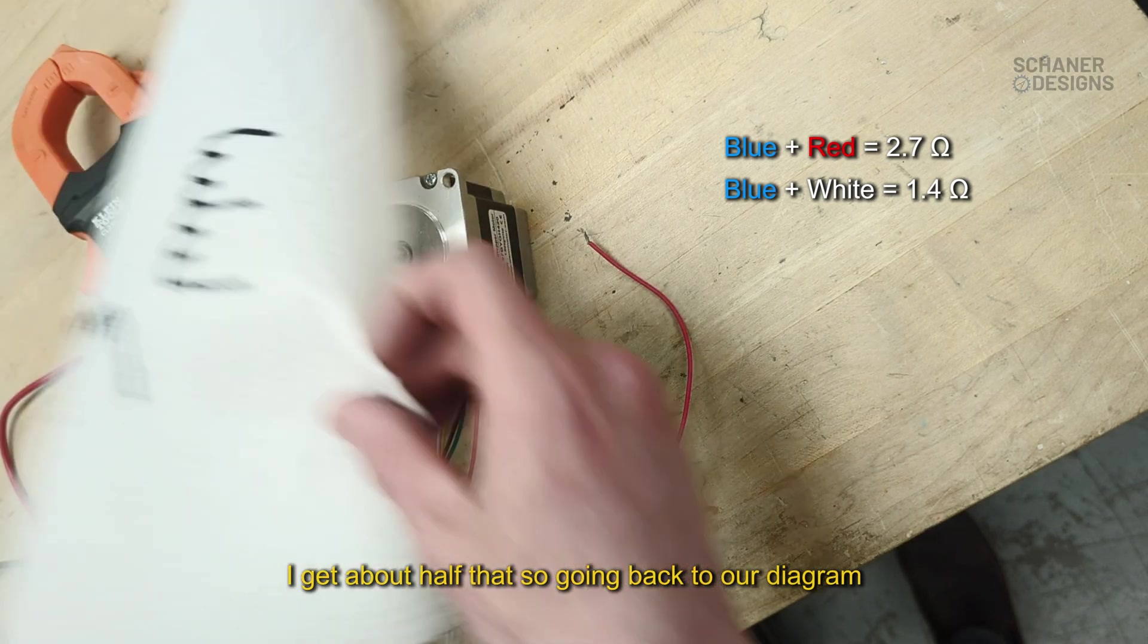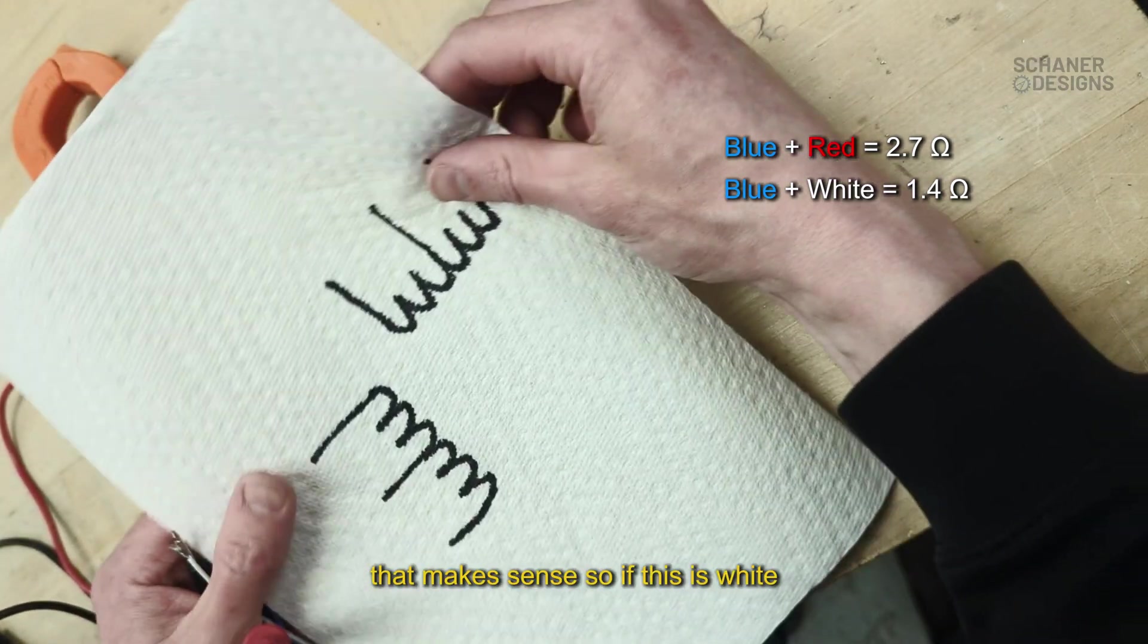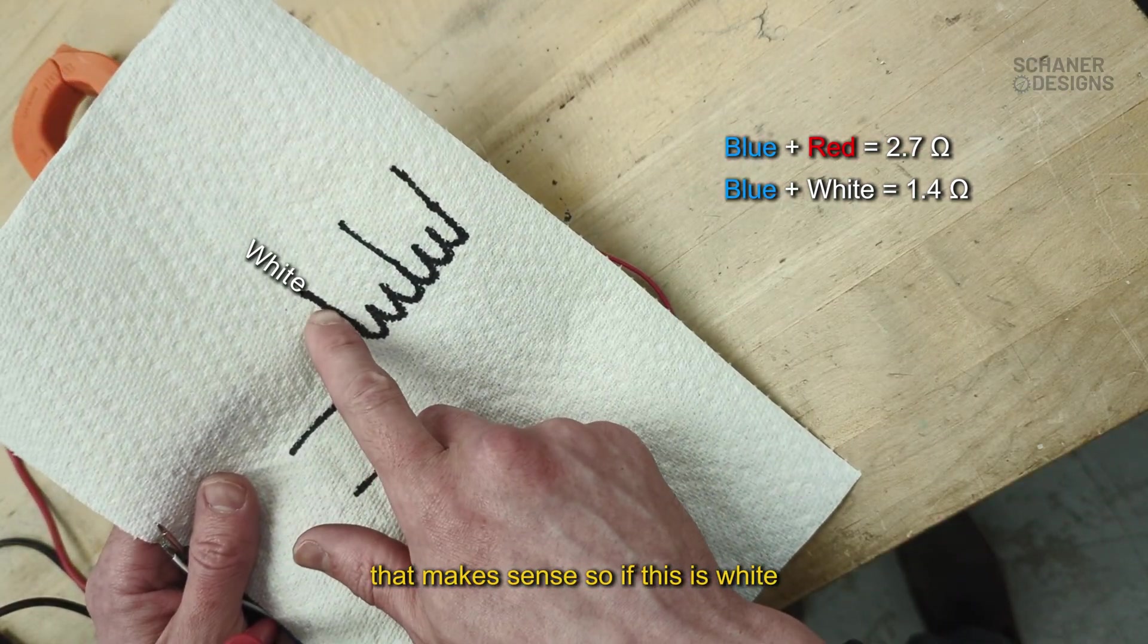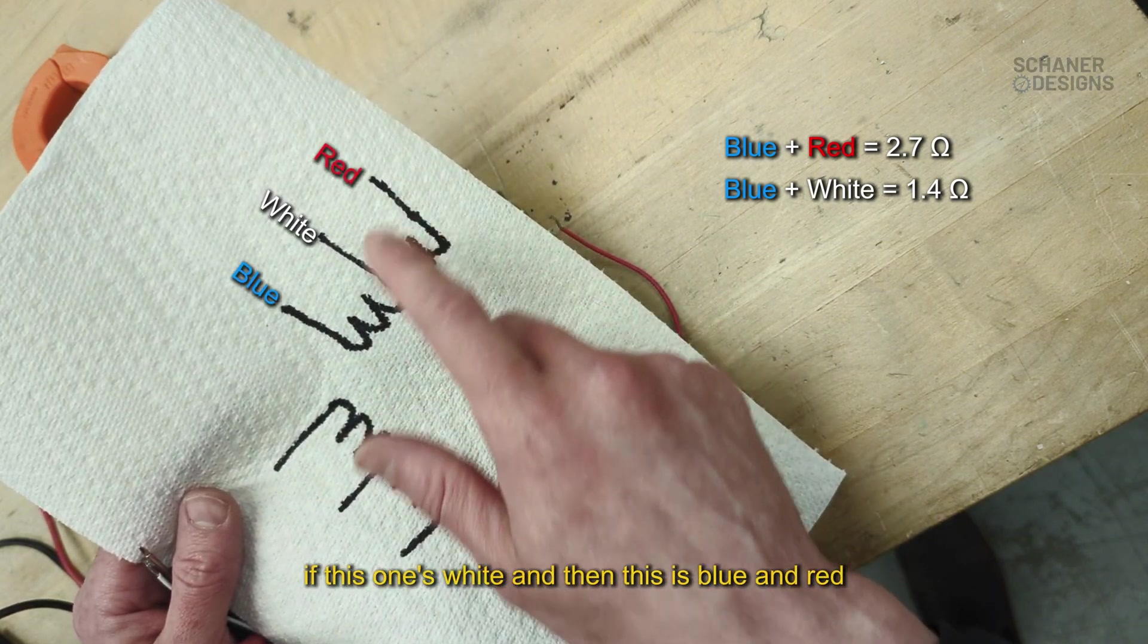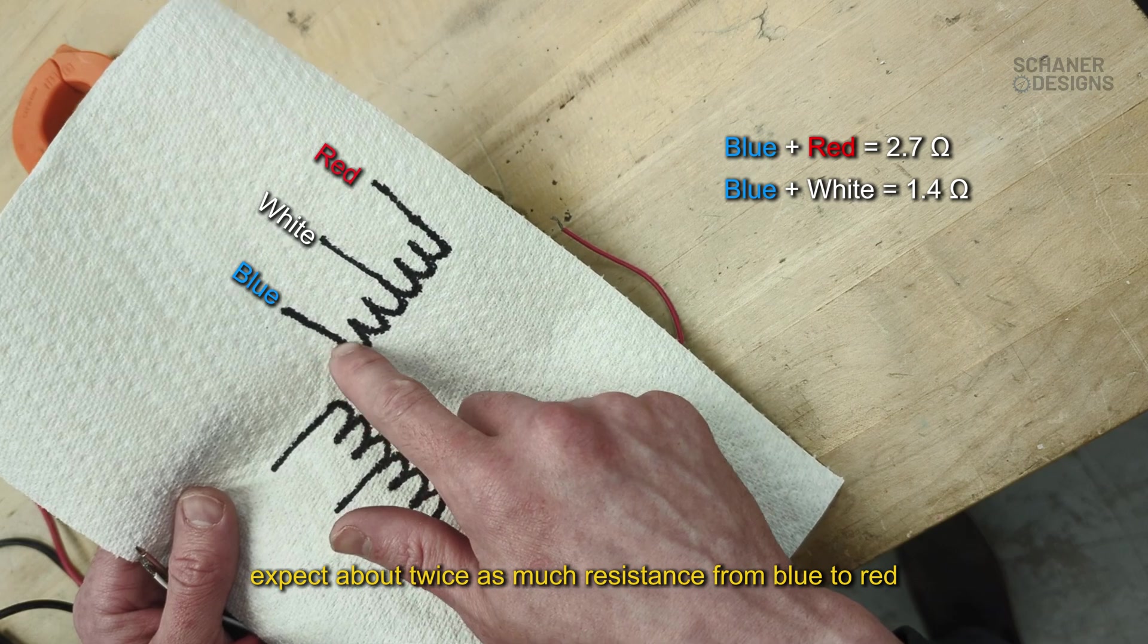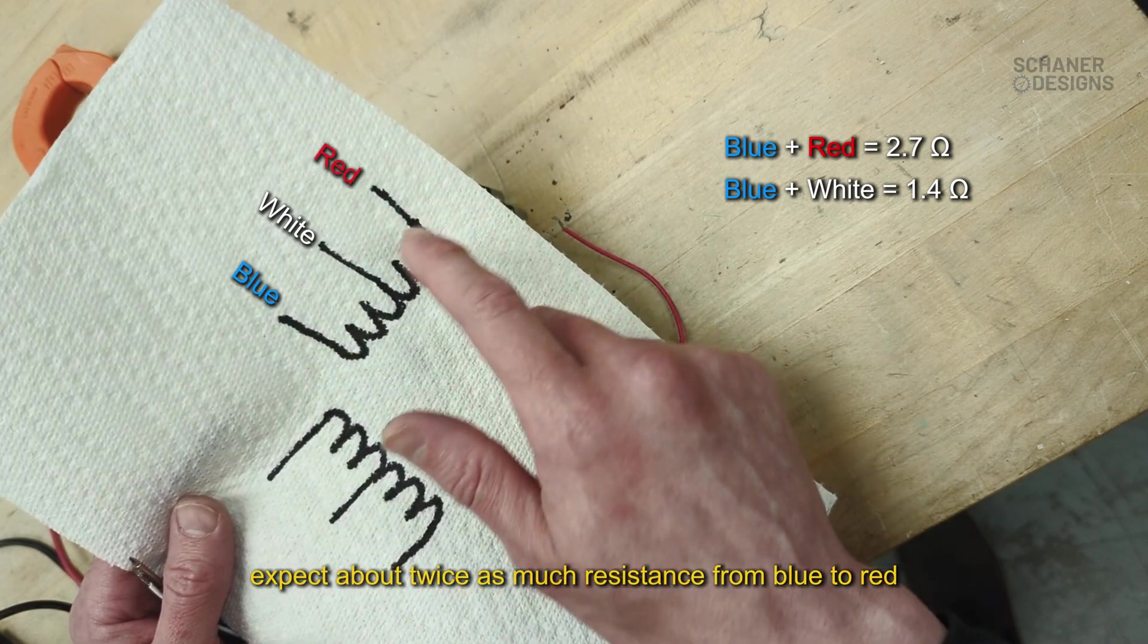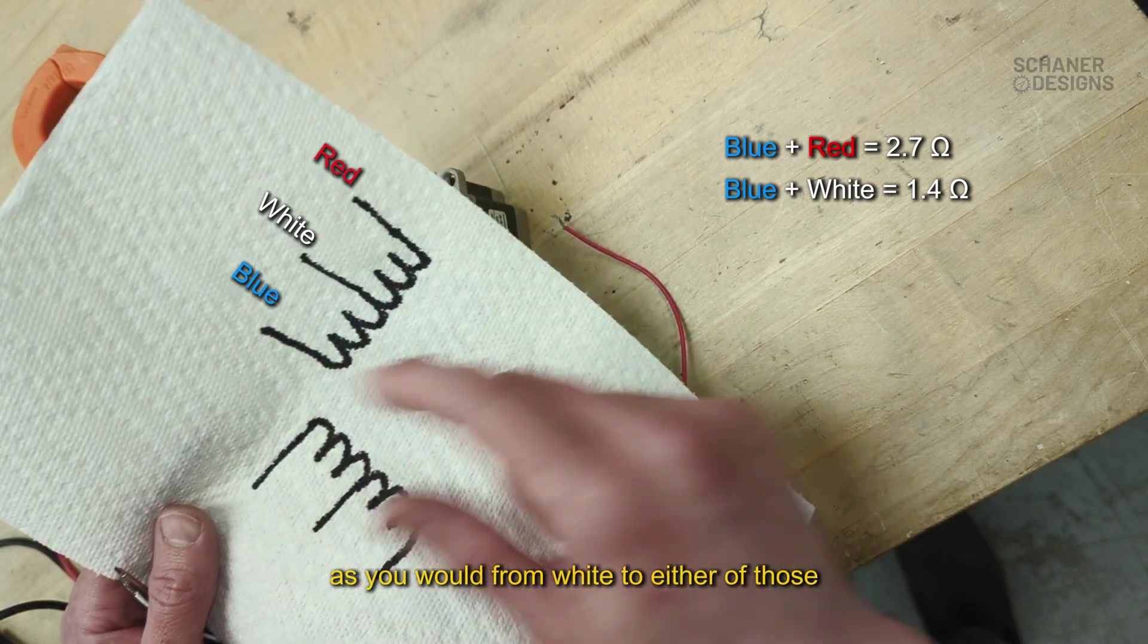Going back to our diagram, that makes sense. If this is white, and then this is blue and red, you'd expect about twice as much resistance from blue to red as you would from white to either of those.